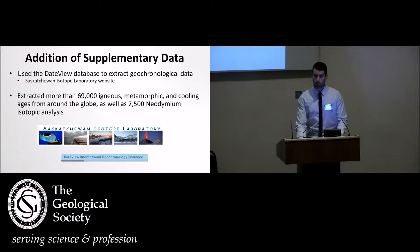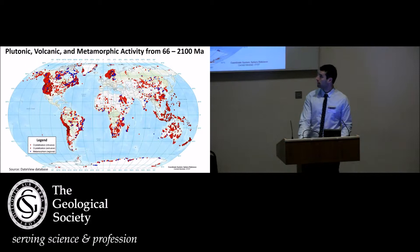To use supplementary data sets with the detrital zircon data that I've compiled, I used DateView that Bruce had already briefly discussed to extract geochronological data. I was able to extract more than 69,000 igneous, metamorphic, and cooling ages from around the globe, as well as 7,500 neodymium isotopic analyses. Just quickly visualizing where all these points exist—these are the crystallization and metamorphic ages extending from 66 million years to 2,100 million years. We have a pretty good range.